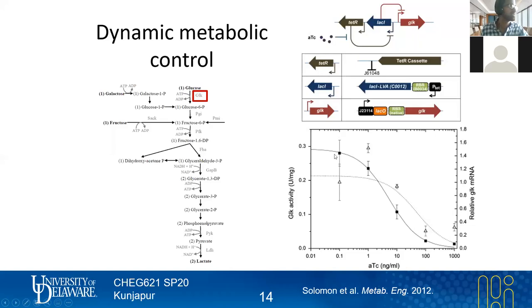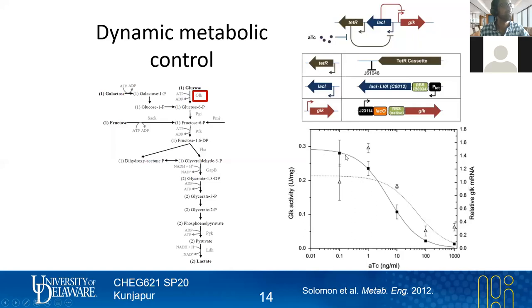This plot shows GLK activity and GLK mRNA on the y-axes versus ATC concentration on the x-axis across several log units. Both activity and mRNA expression decrease as ATC concentration increases. This demonstrated that the approach successfully modulated GLK, though it didn't necessarily result in the highest product yields. The Prather Lab then took this further through several iterations.